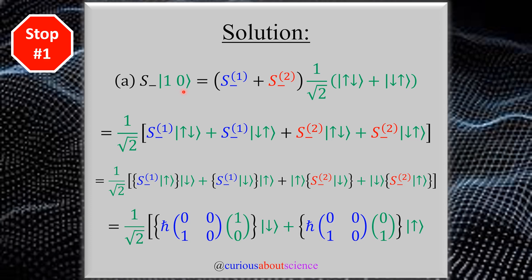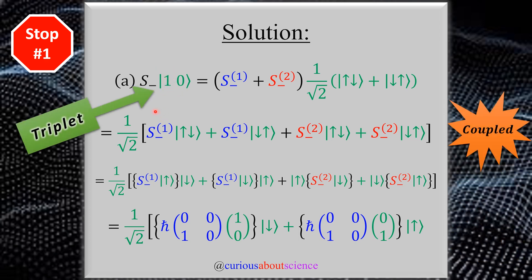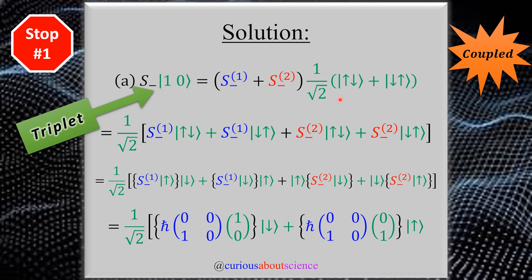Because we're adding two spins, we have an operator that acts on state 1 and an operator that acts on state 2. The notation gets messy because we're trying to highlight the conjoined state S and conjoined state M, which is a linear combination of each individual state. Because M equals 0, there are two ways to get that — via spin-up/spin-down and spin-down/spin-up — giving us a triplet state in the coupled basis.